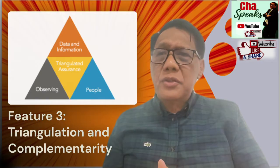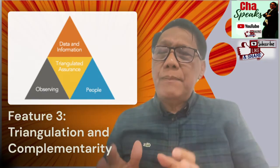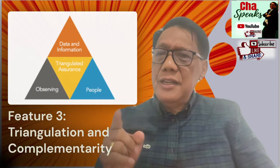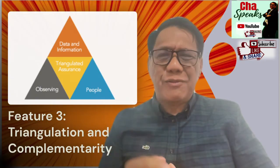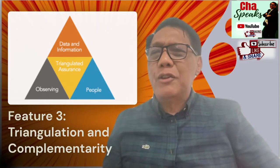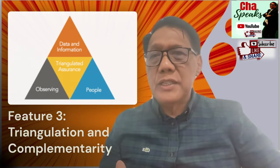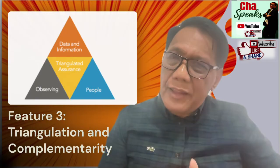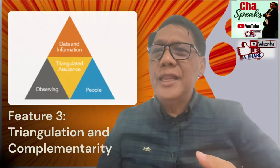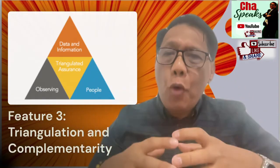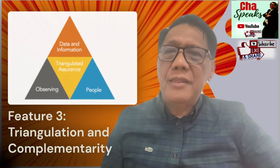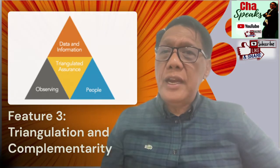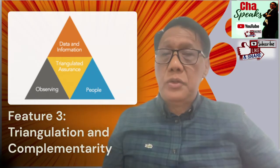Third, Triangulation and Complementarity. Mixed methods research emphasizes the concept of triangulation and complementarity. In my next video, I will have a dedicated video on triangulation — please watch for that. Triangulation involves comparing and contrasting findings from different data sources to validate and corroborate the results. Complementarity, on the other hand, focuses on how quantitative and qualitative data can complement each other, providing a more complete understanding of the research topic. By leveraging these principles, researchers can enhance the credibility and depth of their research findings.